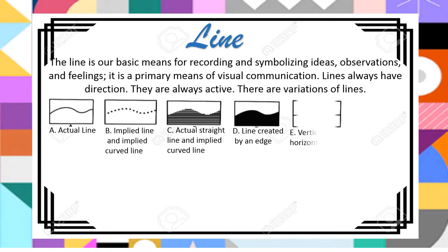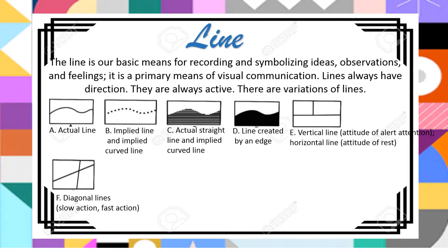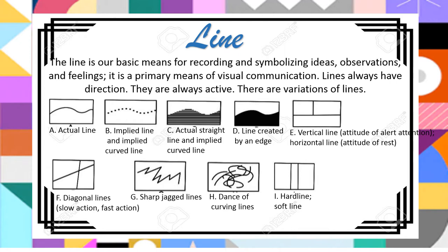Vertical lines represent an attitude of alertness and attention. Horizontal lines represent an attitude of repose. Diagonal lines suggest slow or fast action. Sharp, jagged lines and dancing curving lines, hard lines and soft lines, and rugged, irregular lines are also varieties.